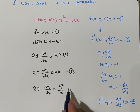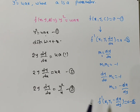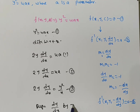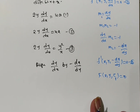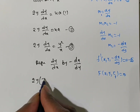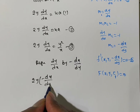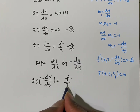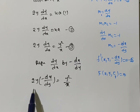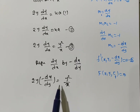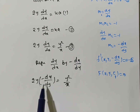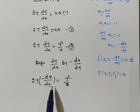To get the orthogonal trajectory, we replace dy/dx with -dx/dy. So the equation becomes 2y(-dx/dy) = y²/x. By observation, this is a first-order, first-degree differential equation in dx/dy, and we can use the variable separable method to solve it.